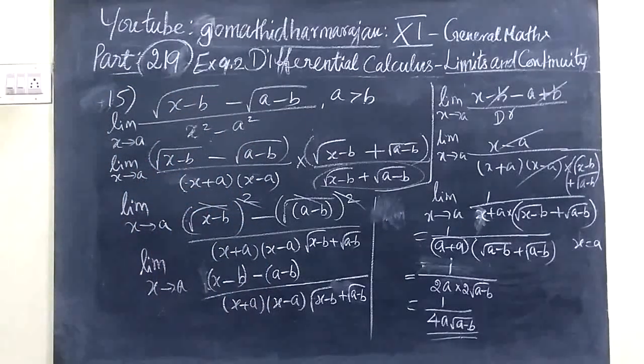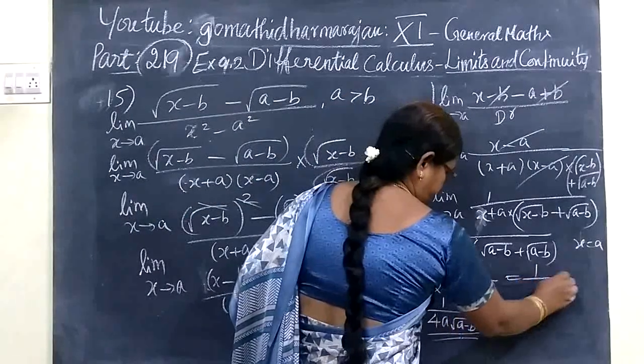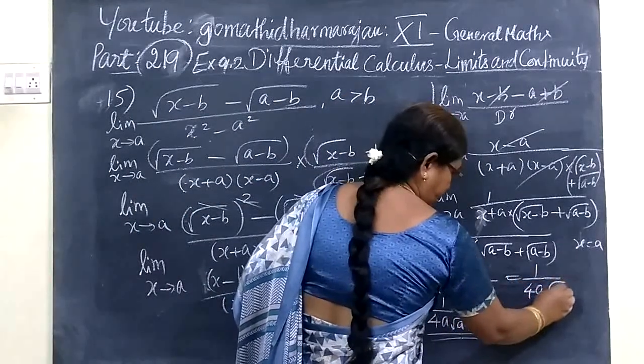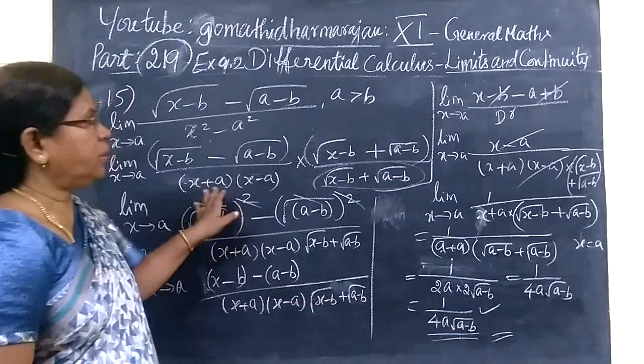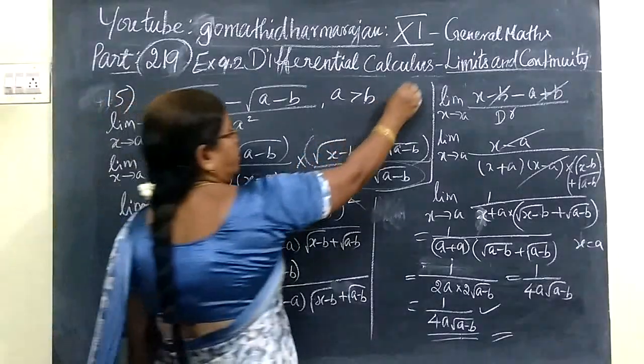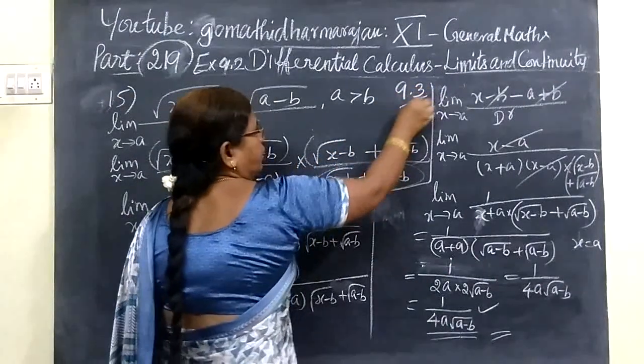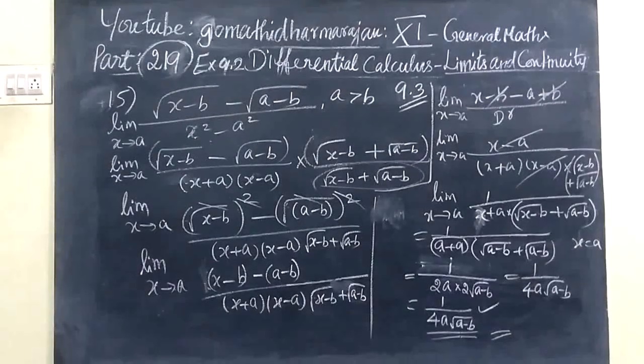1 by 4A root of A minus B, so this answer is correct. So this is equal to A minus B, so this is equal to A minus B. So hope you understand this exercise will be over. Next we are going to see 9.3. Thank you.